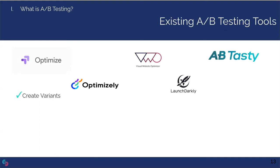Because experimentation is an important part of optimizing your website, there is a huge range of optimization software available, providing services from simple to complex. In general, client-side tools facilitate creating variants, deploying them, splitting traffic, and some also include built-in tracking and analytics tools to help determine which variant provides the most optimal user experience.